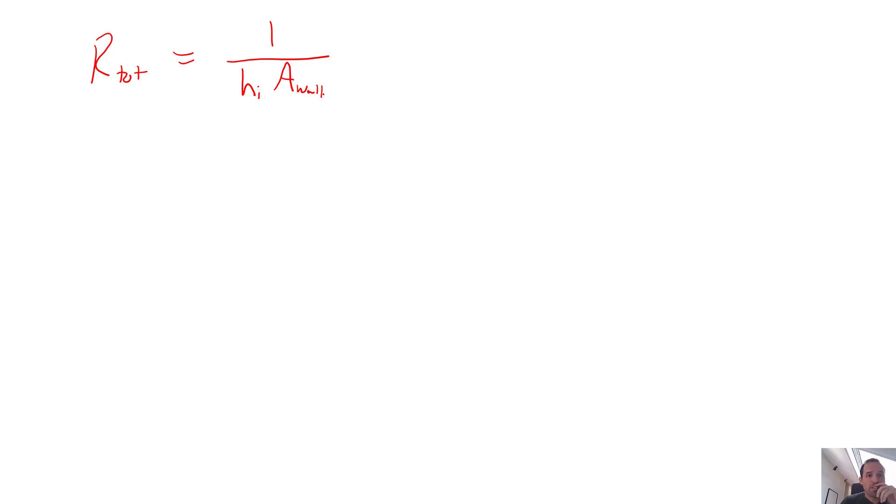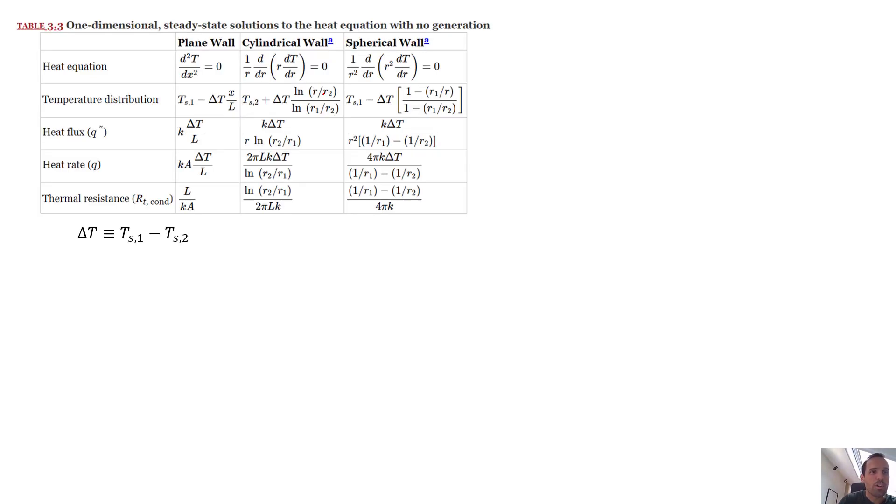And we can use this table from the book, table 3.3. So here we're dealing with a plain wall system. We can just look up what's the thermal resistance for that plain wall system. And it is L, or the wall thickness, divided by K, which is the wall's thermal conductivity, times A, which is the total surface area of the wall.